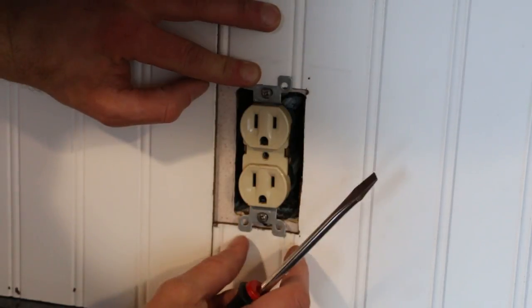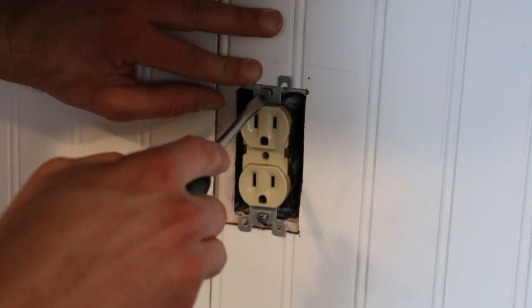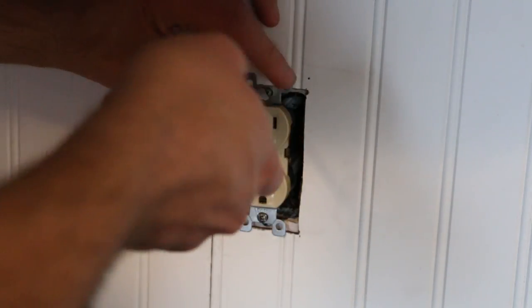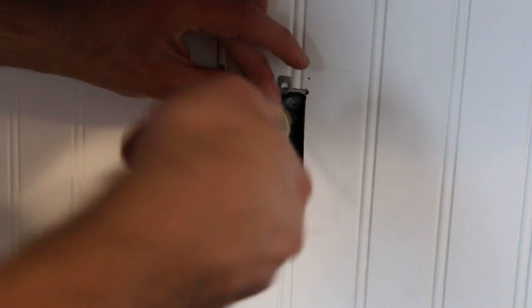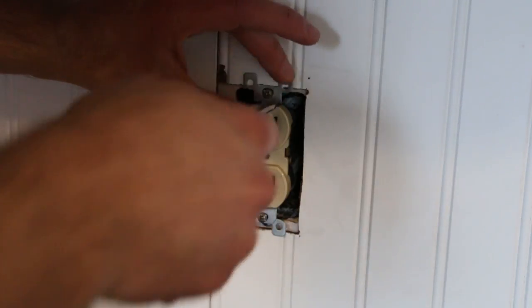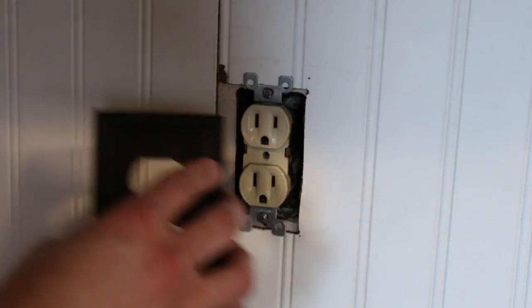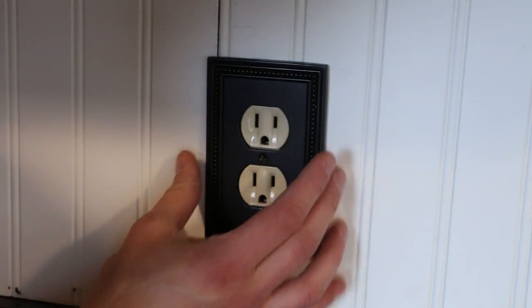See, these little tabs right here are going to stop it from sinking in too far, but it's still going to hold it tight. That way when you're using your electrical outlet, it doesn't want to move when you plug things in and out. Give it a nice tight feel - just snug, doesn't have to be super tight. And once I put my plate on, it's going to cover up all my mistakes right there.